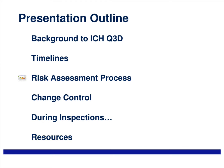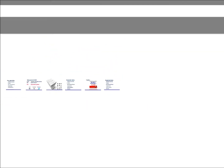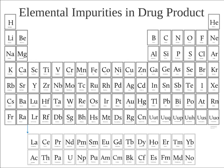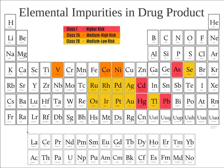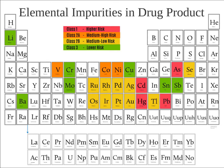If we now look at the risk assessment process. The guideline covers 24 elements and on page 4 of the guideline it splits them into four categories based on their toxicity and also their likelihood of occurrence. Class 1 are human toxicants which have limited or no use in pharmaceutical manufacture — there are four elements. The next level down are route-dependent human toxicants split into Class 2a, those with a high probability of occurrence (three elements), and Class 2b, those with reduced probability of occurrence (ten elements). Finally, Class 3 are of relatively low toxicity by oral route, and there are seven of those.